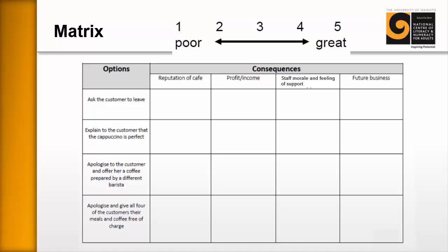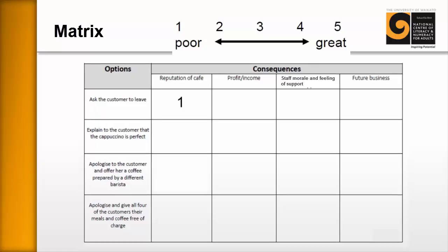Let's explore the first option: if Tony asks the customer to leave. For reputation of the café, the lady might go out and spread bad reviews about the service and the coffee — so that might score a one. For profit and income, if she doesn't come back they lose a little bit of profit — not too bad, but she might also influence others who would come to the café. For staff morale and feeling of support — how does Linda feel? If Tony sticks up for Linda she'll feel much more valued, so that's quite good. For future business, possibly a two — it's certainly not going to be great. The learners would continue working through all of these options and then calculate which one has the best score.